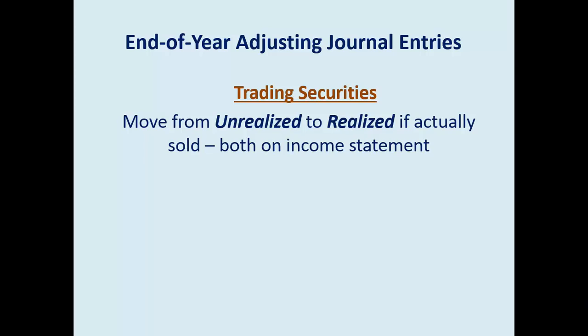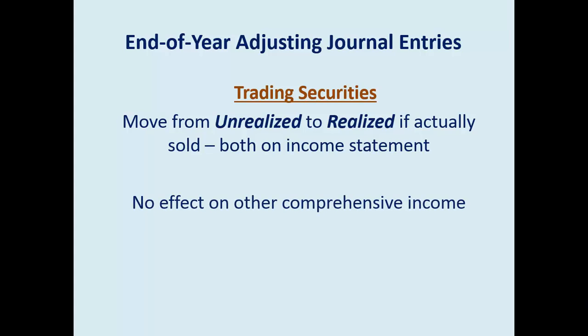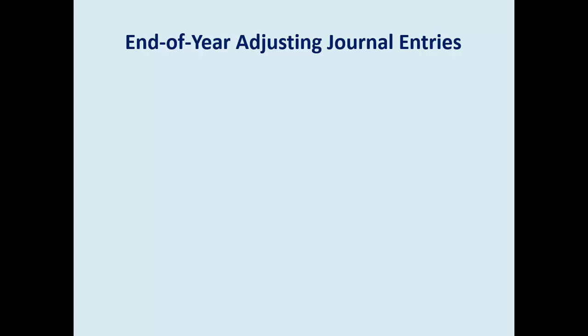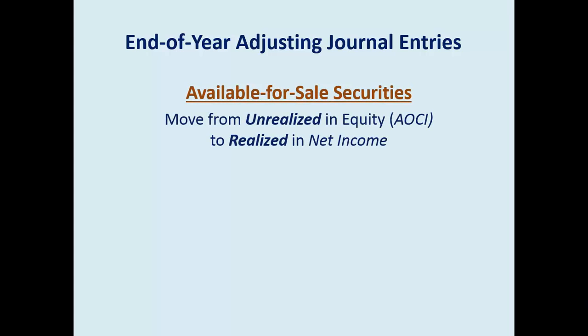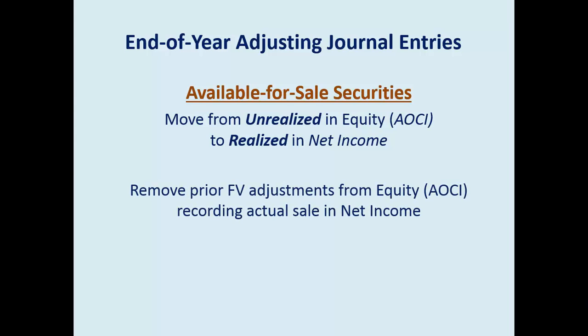If you did sell it and had a realized gain, and you had previously recorded an unrealized gain, you're just moving unrealized to realized — adjusting so you're not double-counting the unrealized gain and the realized gain. There's no effect on other comprehensive income with trading because it's always recorded immediately in earnings. For available for sale, when you sell, you simply reverse out your prior adjustments so you're not double-counting an unrealized fair value adjustment gain with a realized sale gain. This avoids double-counting of gains.